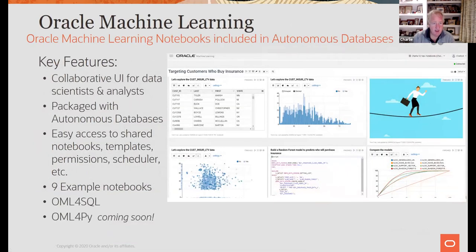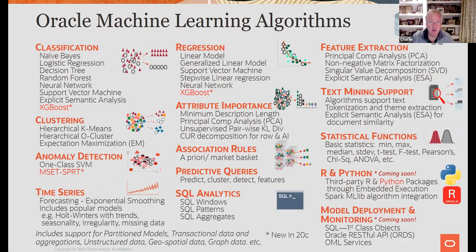We're going to go through Oracle Machine Learning notebooks. They are a collaborative user interface for data scientists and analysts, packaged with the autonomous database. Under the hood, whether you use the GUI, R, or Python, when you press go you're tapping into these algorithms. We have over 30 algorithms — Naive Bayes, logistic regression, decision tree, random forest, and so on.